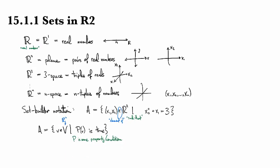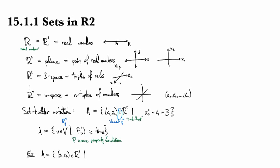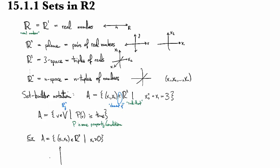Let's do a couple of quick examples. Suppose A is the set of all X₁, X₂ in R² satisfying X₂ is non-negative. I start by drawing my axes, then I look at where X₂ equals 0 — that's this line right here. If I want X₂ to be non-negative, it's going to be this part up here: the line where X₂ equals 1, where X₂ equals 2, where X₂ equals 3, and so on.